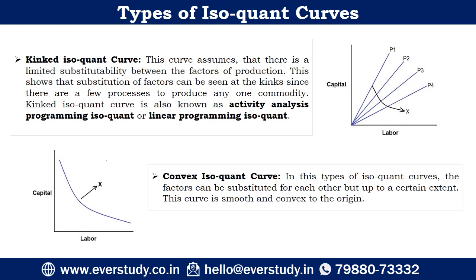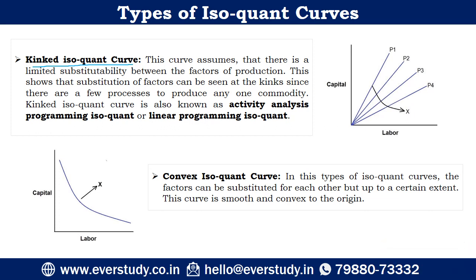The next one is the kinked isoquant curve. This curve assumes that factors of production can substitute each other, but only up to a limited extent. Kinked isoquant curve is also known as Activity Analysis Programming Isoquant or Linear Programming Isoquant.